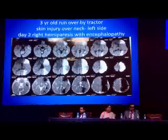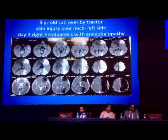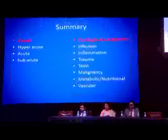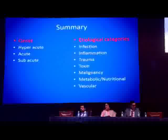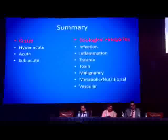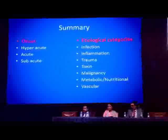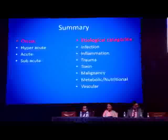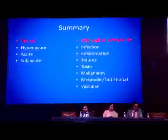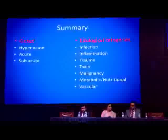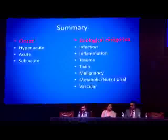Summary: You have to determine whether the onset is hyperacute, acute, or subacute — that gives a lot of etiological classification. Then consider etiological categories systematically: infection (viral, bacterial, protozoal, fungal), inflammation, trauma, toxins, malignancy, metabolic/nutritional. Write them down categorically, then say which are odd points and less likely — this reduces the chance of missing a diagnosis.